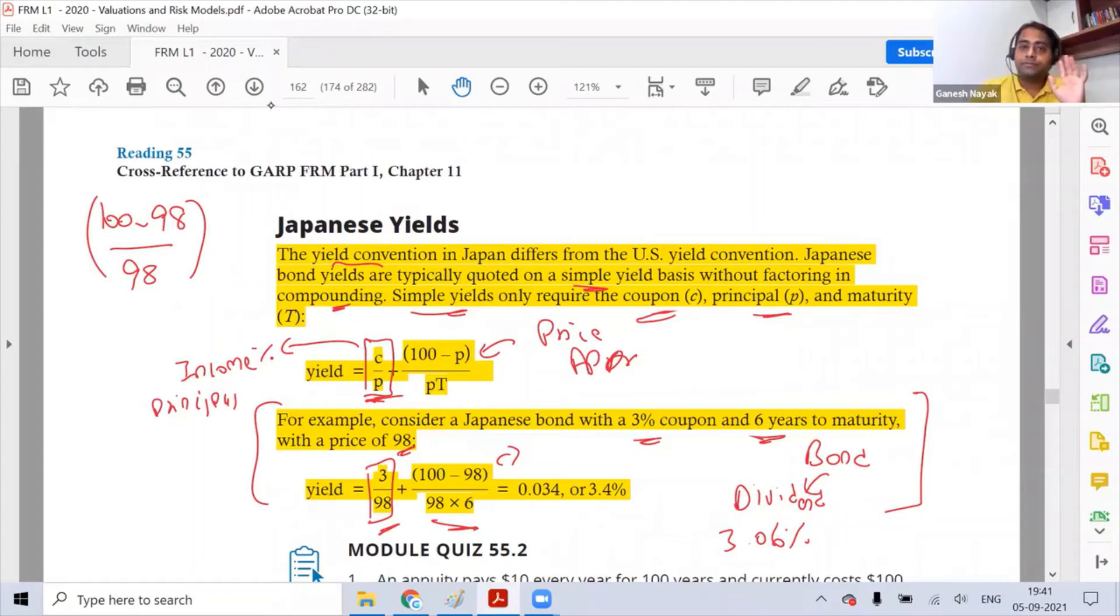So it's going to be 2 divided by 98, right? And what I am doing is when I'm multiplying it with 6, I am saying this benefit is not for one year, this is for 6 years. And when I am finding the yield, it's an annual yield, so I am spreading that benefit for 6 years. That is why I am dividing by 6.